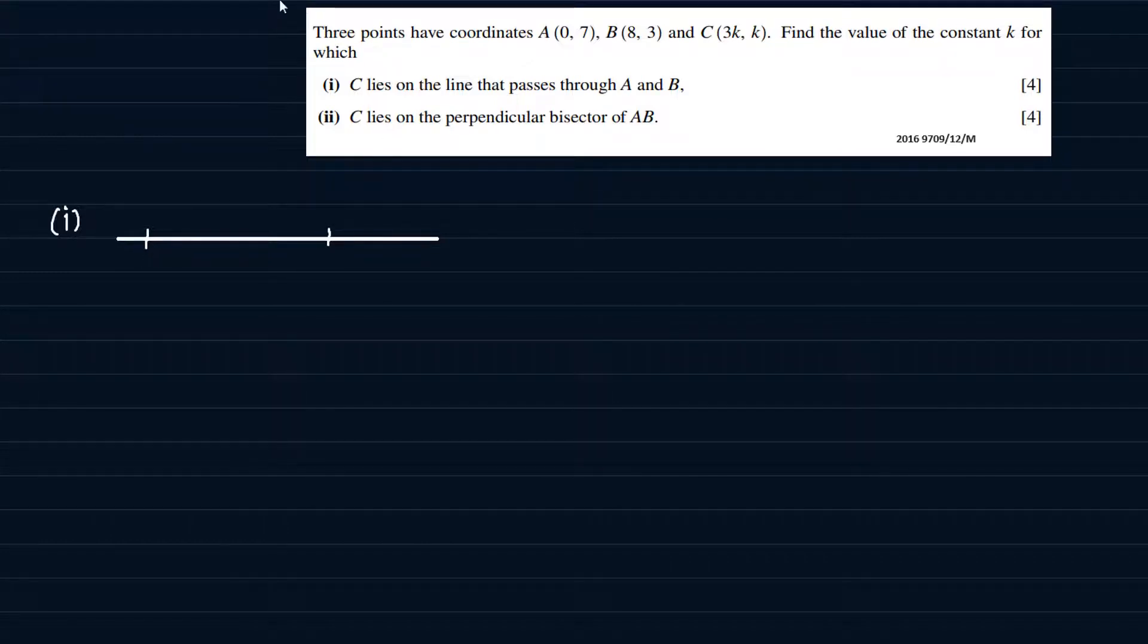So I have drawn a line here. Because on part 1, they're saying C lies on the line that passes through A and B. So this is the line that passes through A and B, and C is somewhere along the line. So I'll just have my C here. Now, A has coordinates 0, 7. B has coordinates 8, 3. C has coordinates 3k, k.